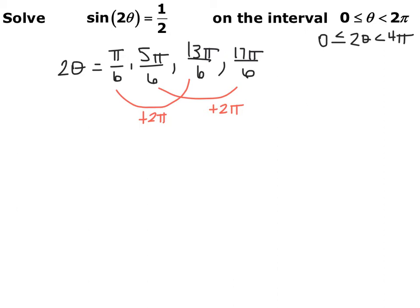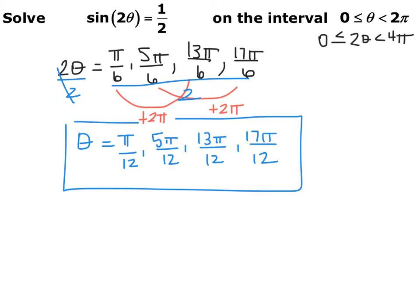But the inside of the trig function is 2 theta, not theta, so I need to divide everything by 2 to solve for theta. Dividing by 2 brings us back into the original interval of 0 to 2 pi. So theta equals pi/12 (which is pi/6 divided by 2), 5pi/12, 13pi/12, and 17pi/12. All four angles are between 0 and 2 pi. If we had not expanded our interval, we would have missed two of these angles.